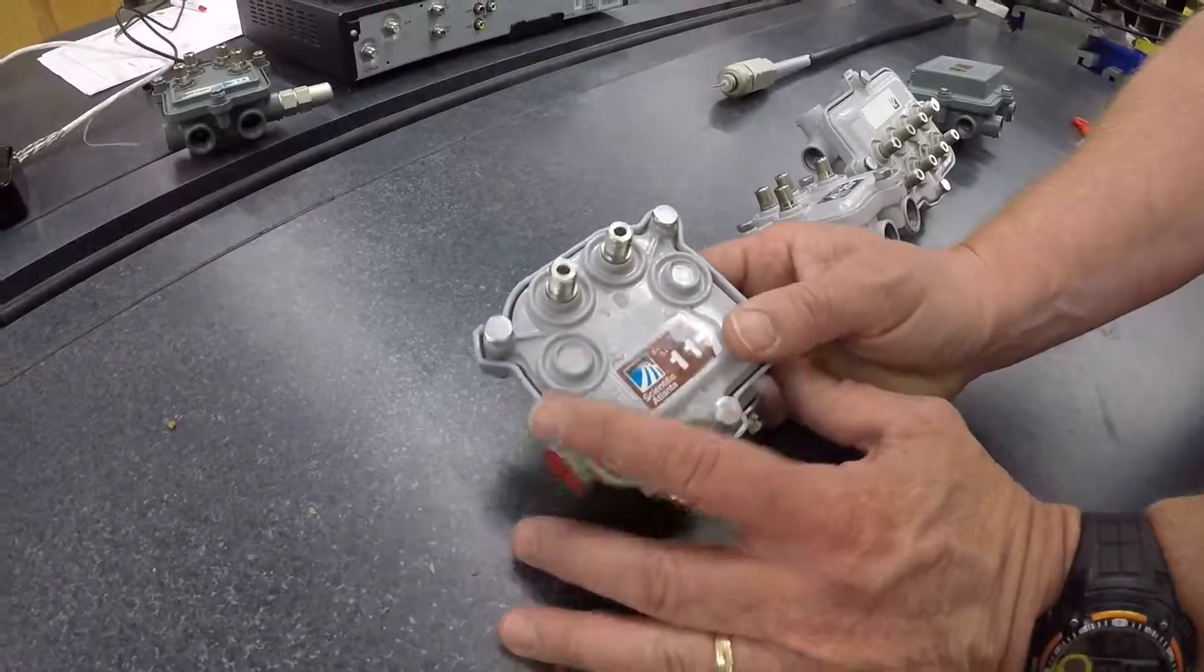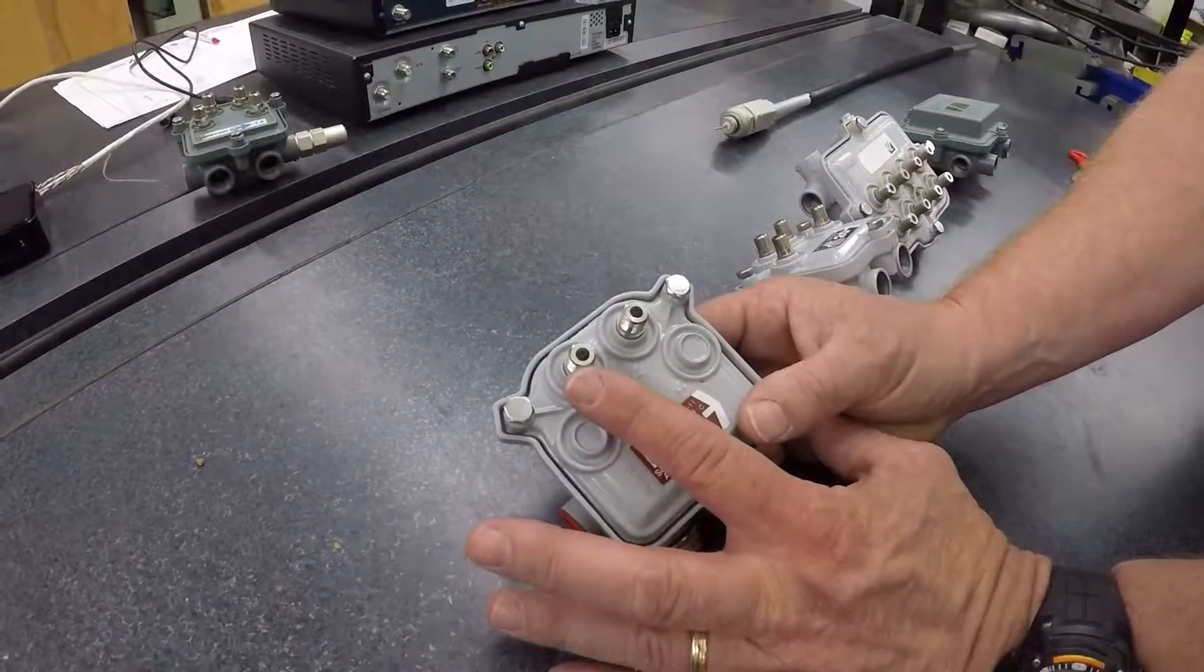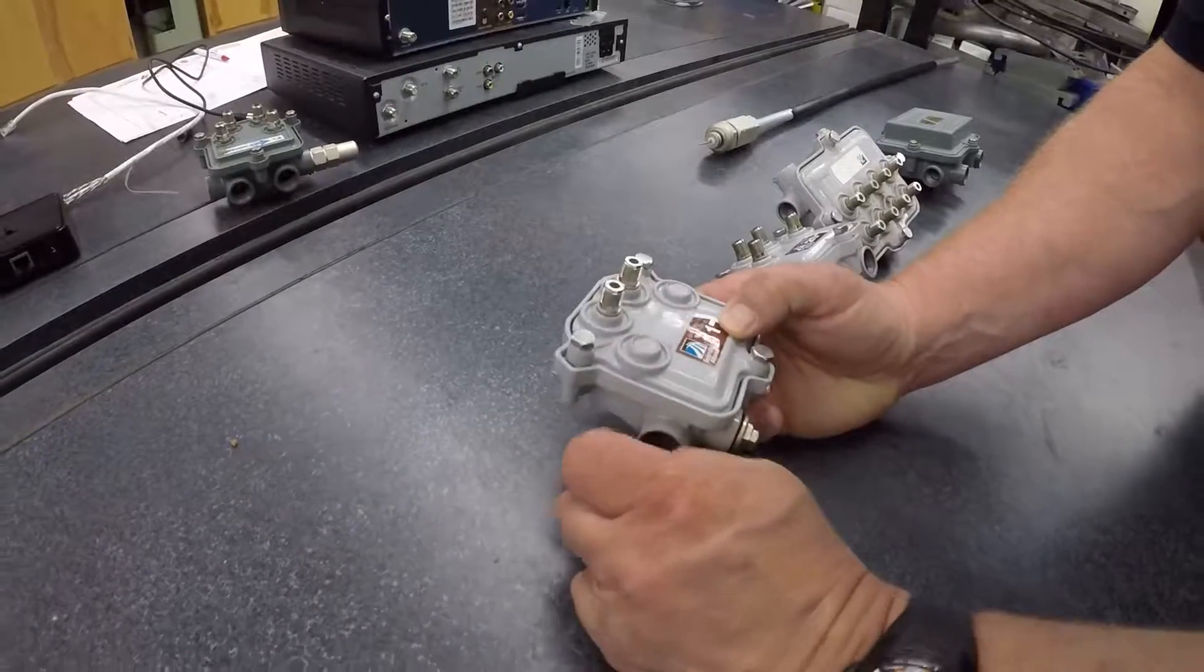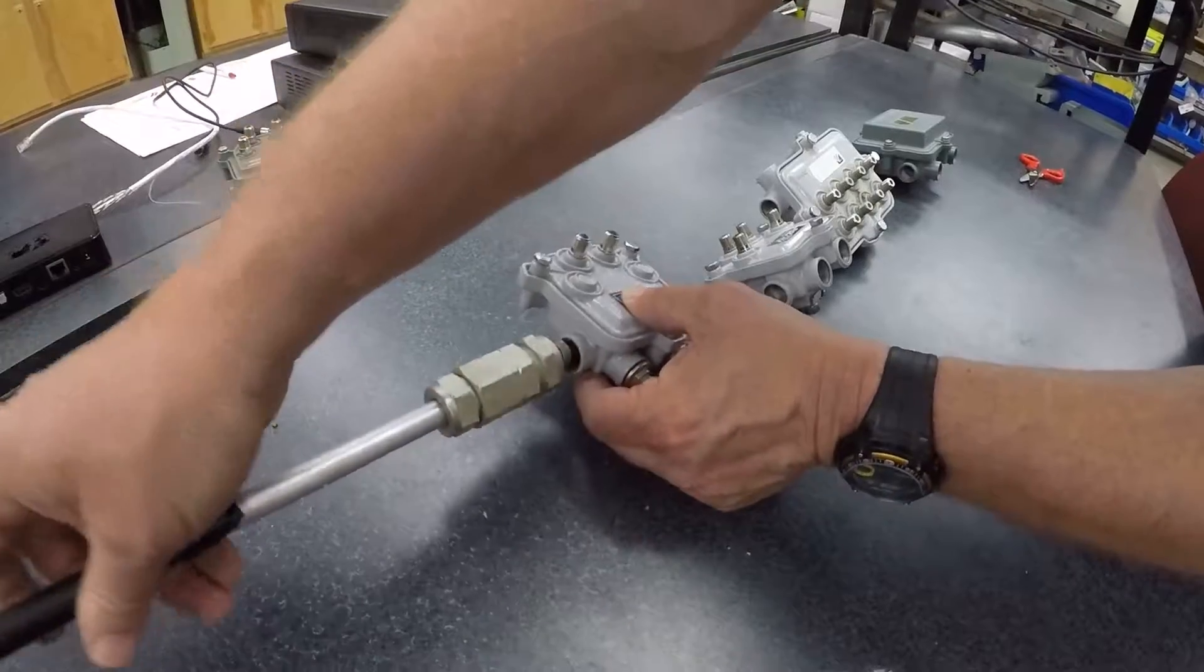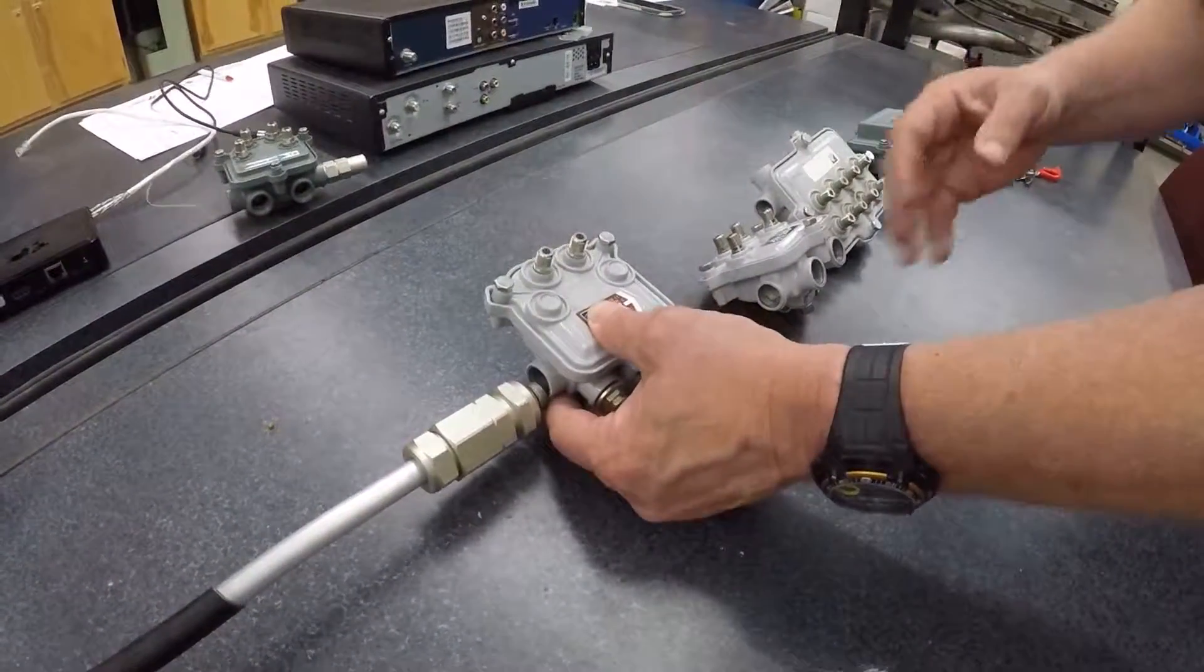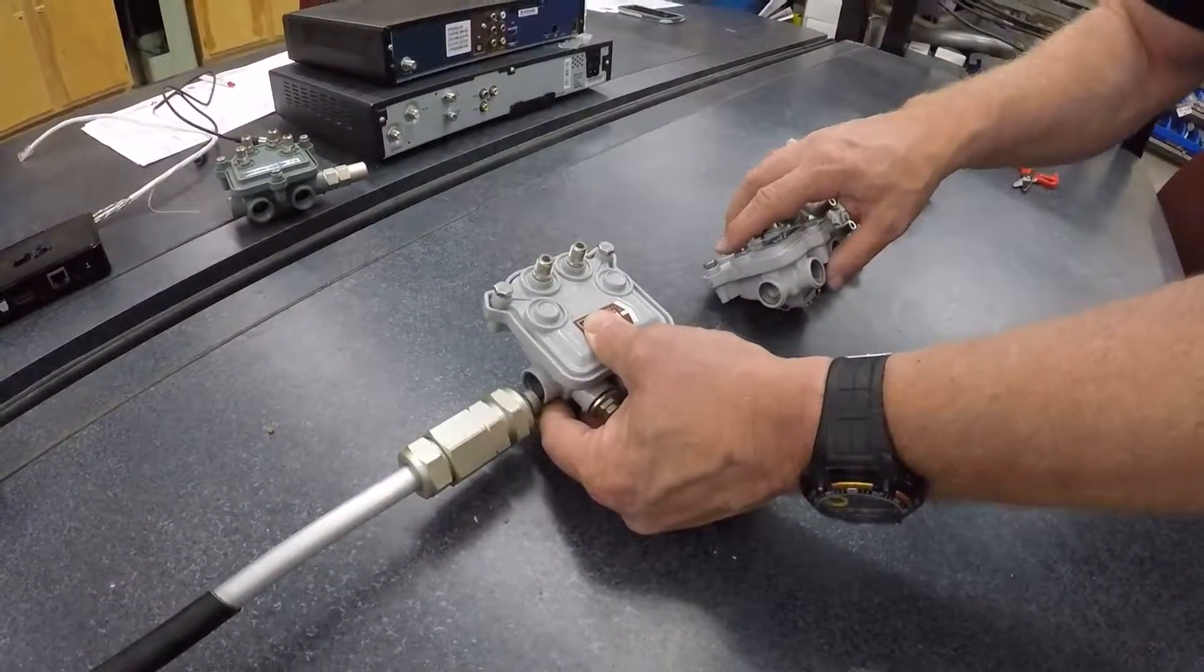So this is a two port tap because it has two outputs. What would happen is you'd have your hard line that would be an in, like so, and then it would keep on going down the line to the next device.